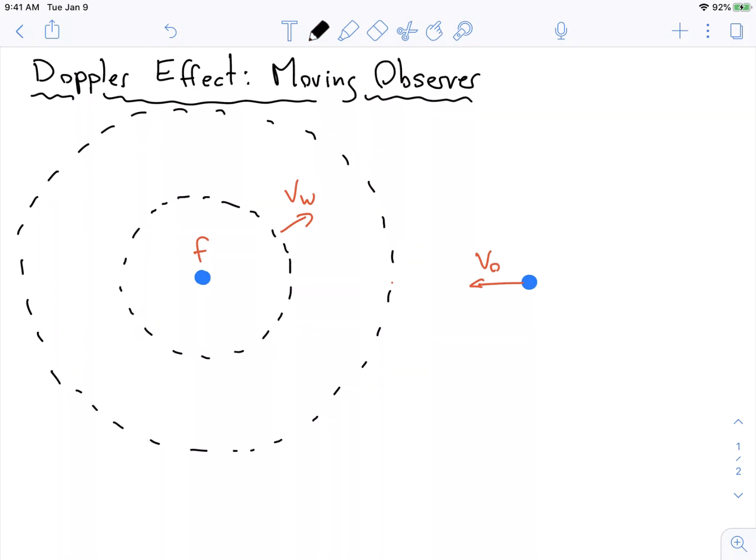We can use Galileo to say that the velocity that this observer sees this wave traveling at is equal to the velocity of the wave plus the velocity of the observer.